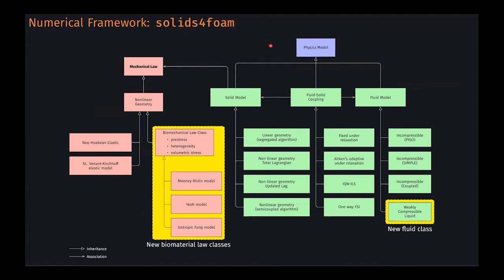In solids4foam there are fluid models, fluid-coupling models, and solid models. Inside the solid models, the mechanical laws were implemented through what I call the biomechanical law class, featuring characteristics of biological tissues such as pre-stress (not used in this work), heterogeneity of material constants, and volumetric stress. From these mechanical laws the three laws used in this work derive: the Mooney-Rivlin law, the Yeoh law, and the isotropic Fung model.